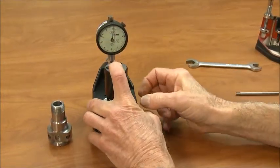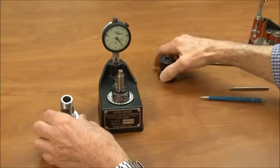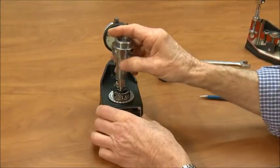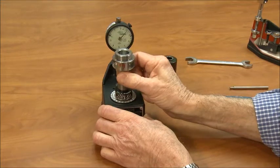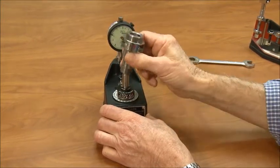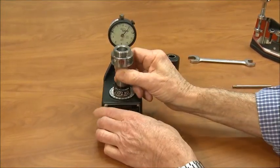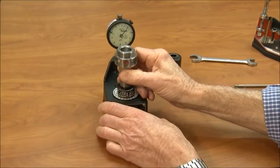Now the gauge is set to receive the customer's part and the customer can check these parts at the rate of several hundred parts per hour, placing them on the gauge, taking the reading. In this case these parts are well within the allowable tolerance of plus or minus two thousandths.